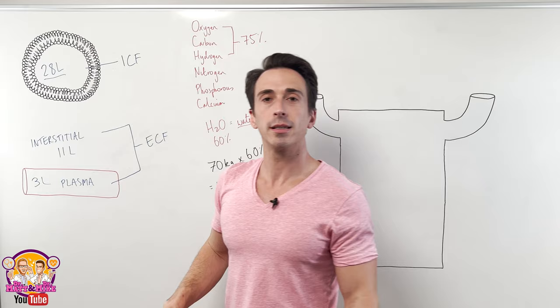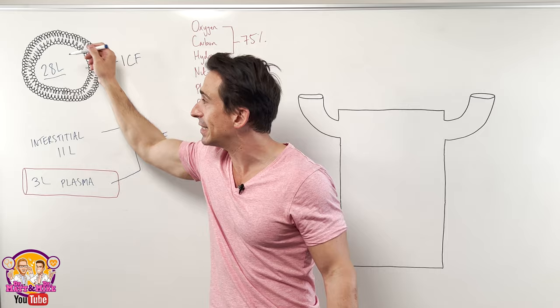Eleven liters sits in the interstitial area and three liters sits in our plasma. So two-thirds of our entire body water sits inside of our cells. The rest sitting outside in those two compartments.